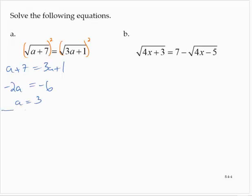Always a good idea to check your work on these with a quick substitution. So square root of 3 plus 7, that's the square root of 10. Right-hand side, square root of 3 times 3 plus 1. That's the square root of 9 plus 1. That's the square root of 10. So that checks out. a equals 3.